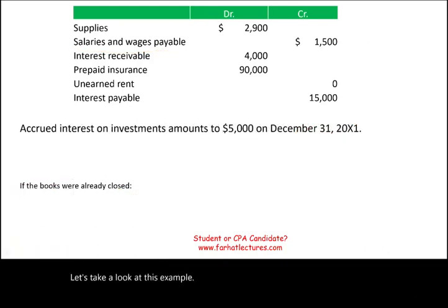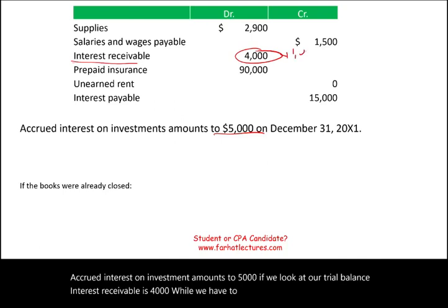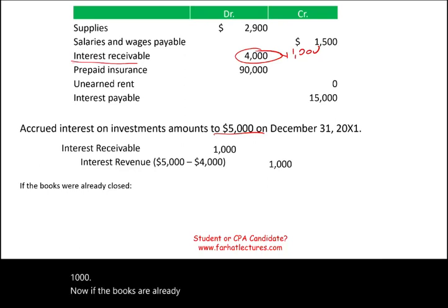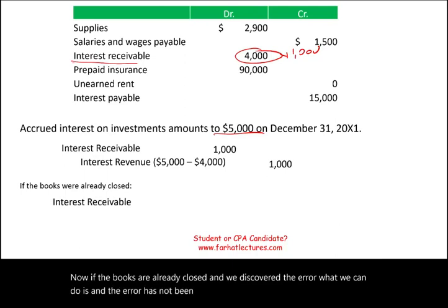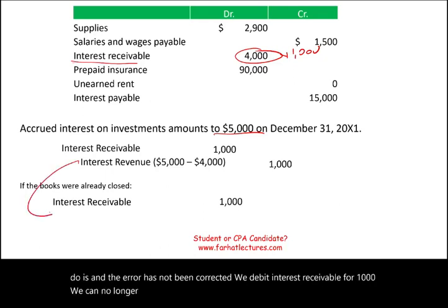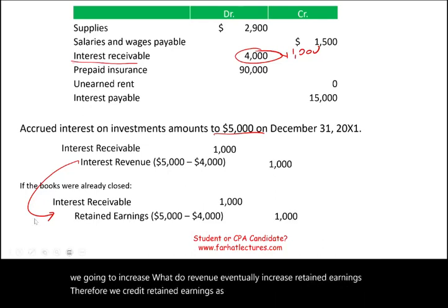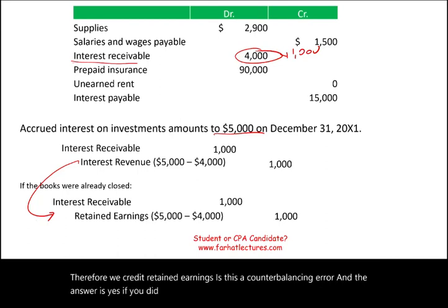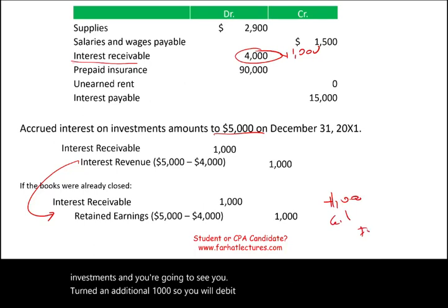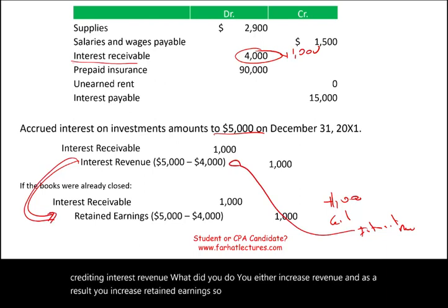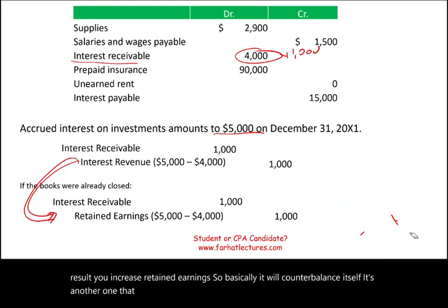Next: accrued interest on investments amounts to $5,000, but interest receivable on the trial balance shows $4,000. We need to add $1,000. Before books are closed: debit interest receivable $1,000, credit interest revenue $1,000. If books are already closed: debit interest receivable $1,000, credit retained earnings $1,000, since we can no longer increase revenue directly. Is this counterbalancing? Yes — at some point you'll open your bank statement, see you earned an additional $1,000, debit cash, credit interest revenue, and retained earnings will be corrected. It will counterbalance itself.